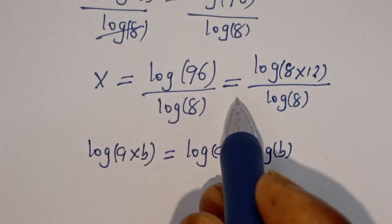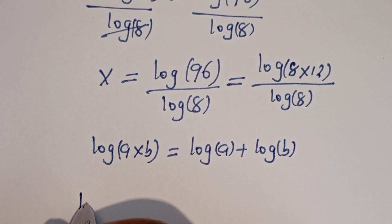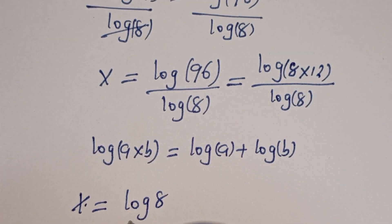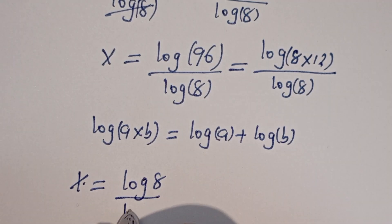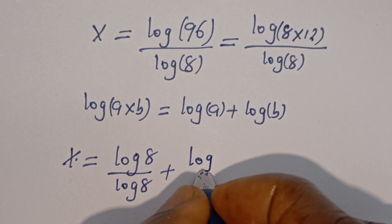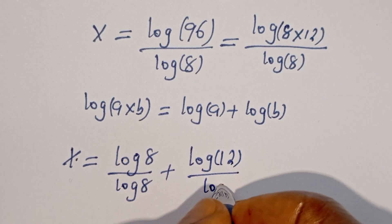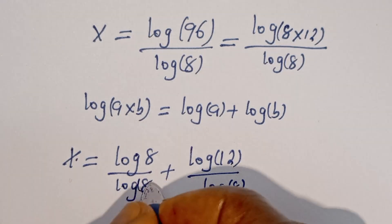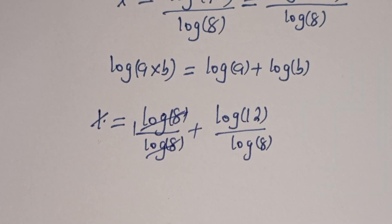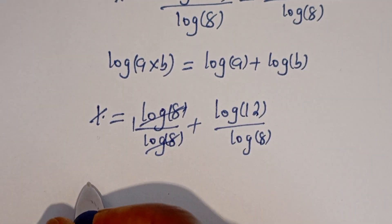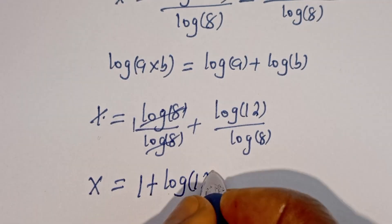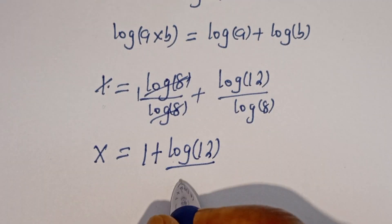This is equal to log a plus log b. So all of this can be written as log 12 divided by log h. This will cancel, giving s is equal to 1 plus log 12 divided by log h.